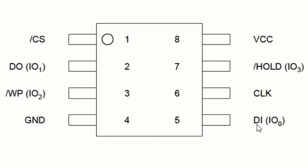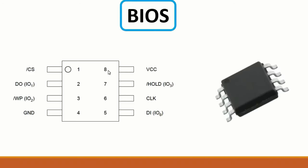The BIOS IC pins include: data input, clock, hold, and VCC on pin 8. Always you should find 3.3V on pin 8 of every BIOS in the motherboard without powering on the board. If you don't find 3.3V, you have a problem with the 3.3V power rail or the 3.3V/5V circuit has failed.